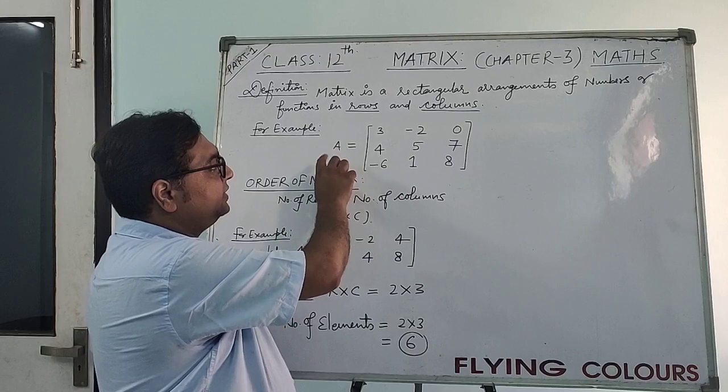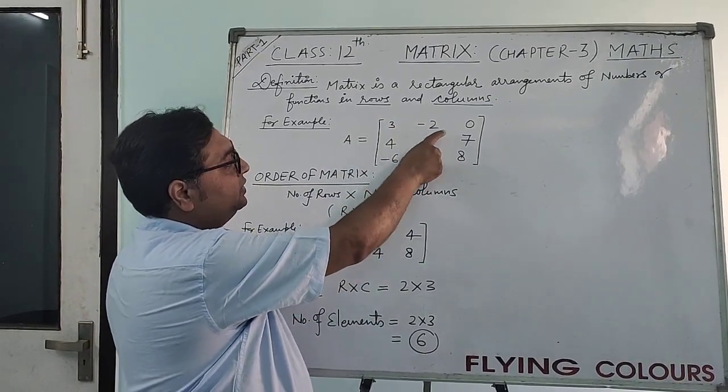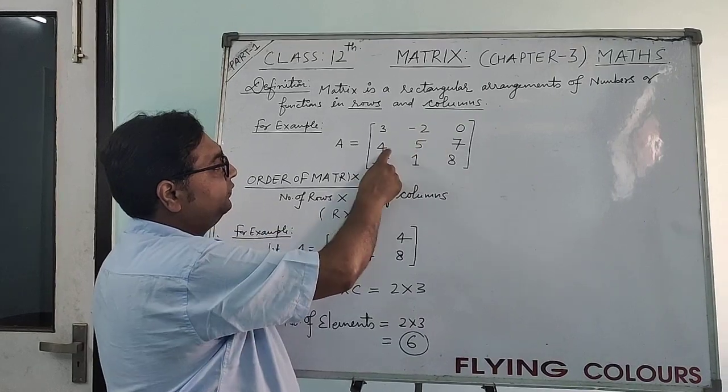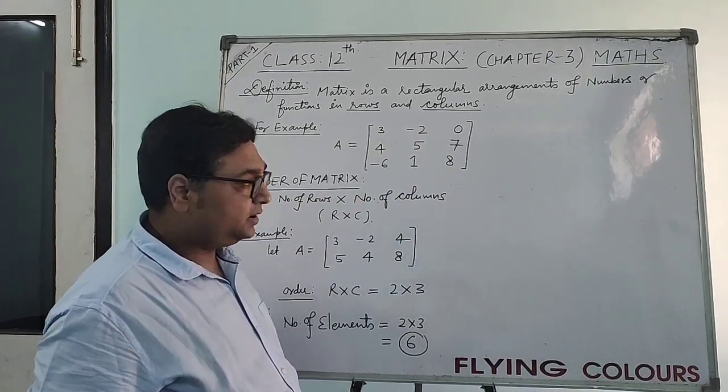For example, capital A is equal to, in this square bracket I am writing the numbers like 3, minus 2, 0, 4, 5, 7, minus 6, 1 and whatever the number is.